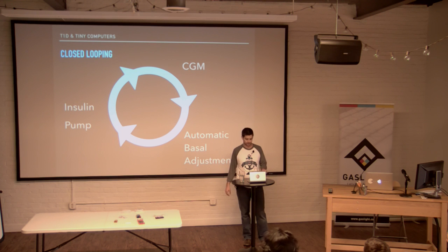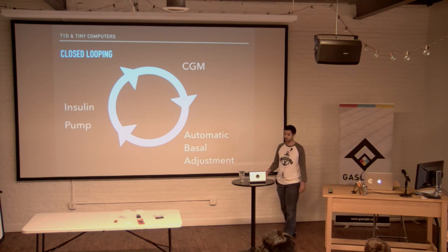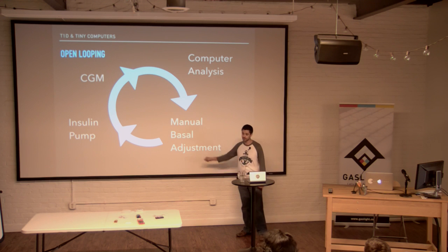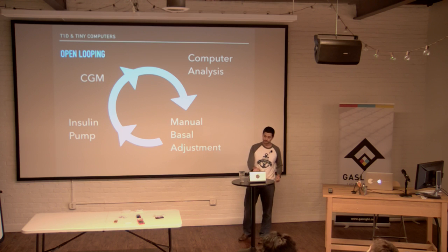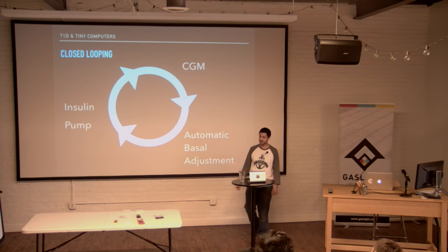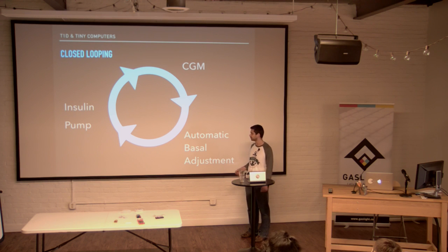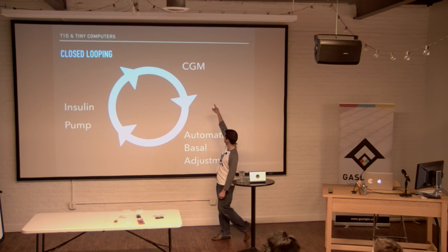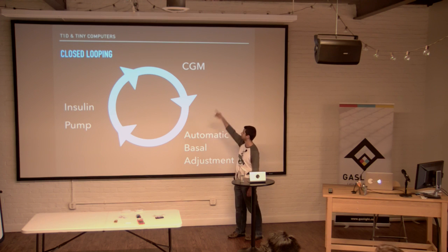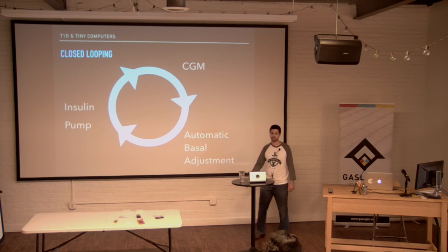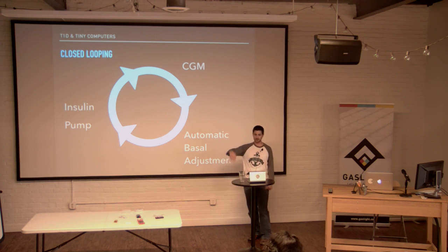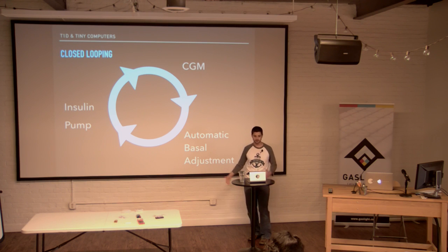There's also something called closed looping. Closed looping takes your intervention out of it. Where in open loop you manually tell the pump to change your basal rate, the closed loop says: if I can send a command to the insulin pump to change it automatically, why wouldn't I do that? The insulin pump talks to the computer, the CGM talks to the computer, and the computer determines a predictive analysis of what's going to happen next, then tells your pump to change the basal rate. As you go high, it applies downward pressure by giving you more insulin. As you go low, it cuts off the insulin so you can adjust and come back up.